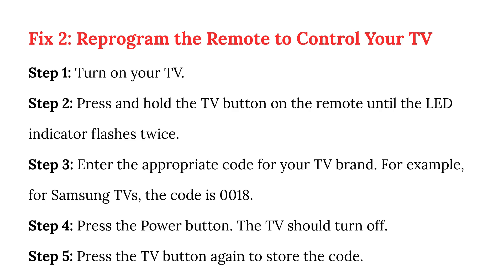Fix 2: reprogram the remote to control your TV. Step 1: turn on your TV. Step 2: press and hold the TV button on the remote until the LED indicator flashes twice. Step 3: enter the appropriate code for your TV brand — for example, for Samsung TVs the code is 18. Step 4: press the power button; the TV should turn off. Step 5: press the TV button again to store the code.